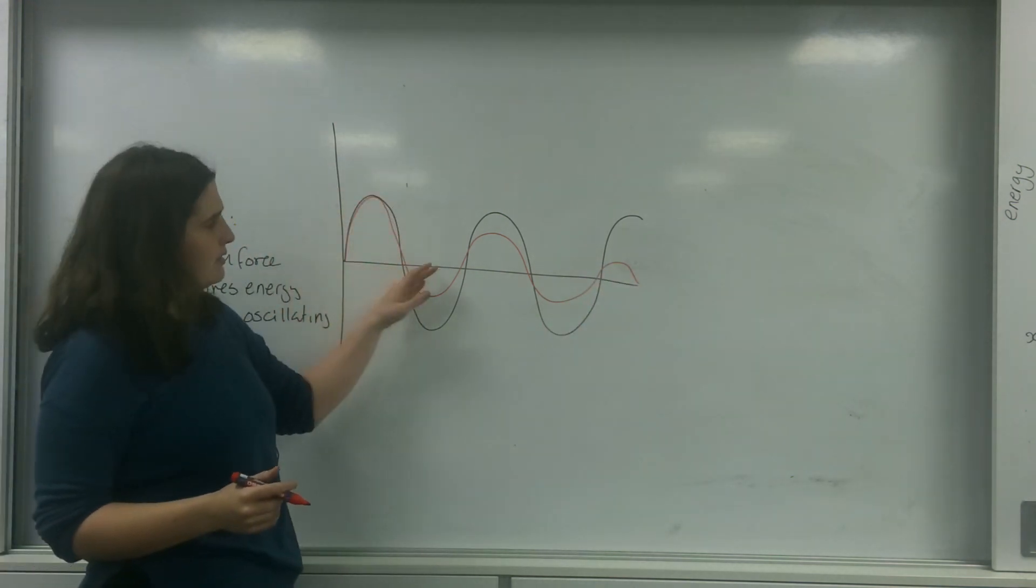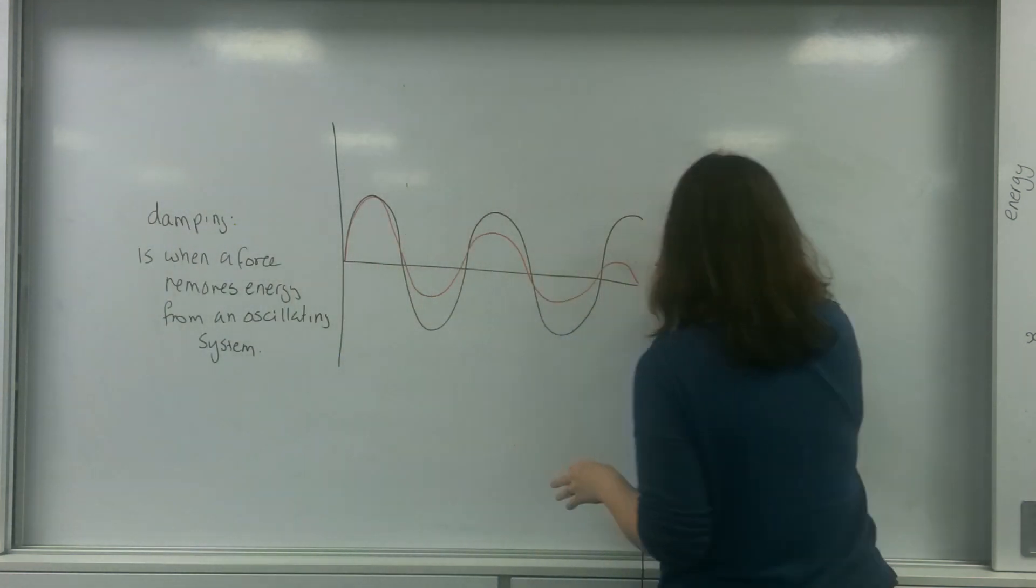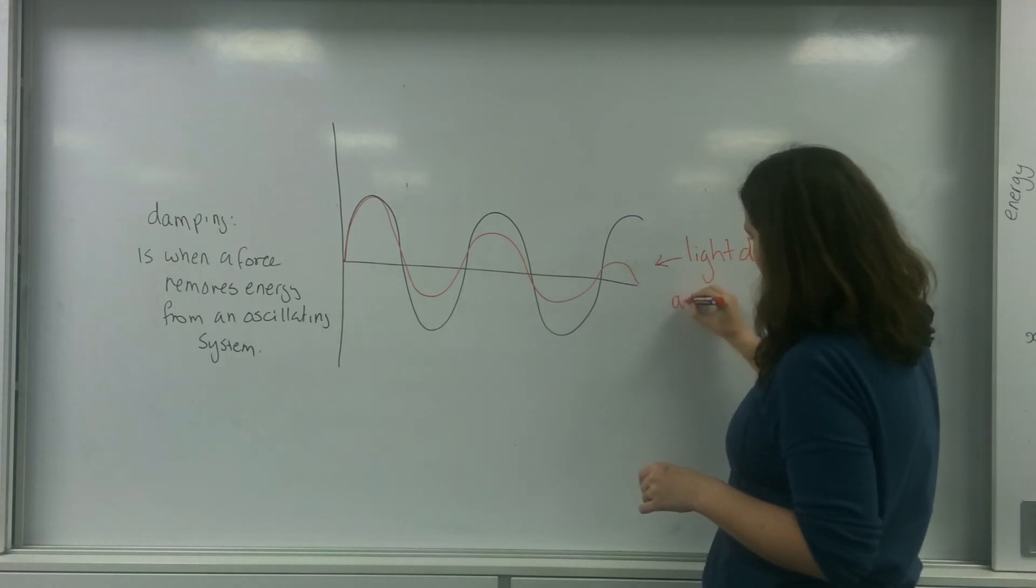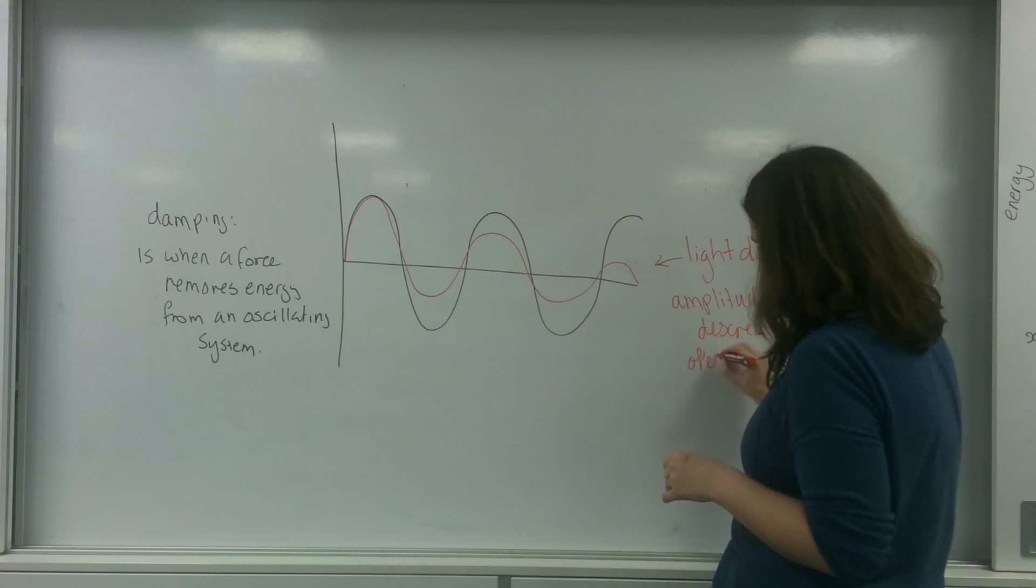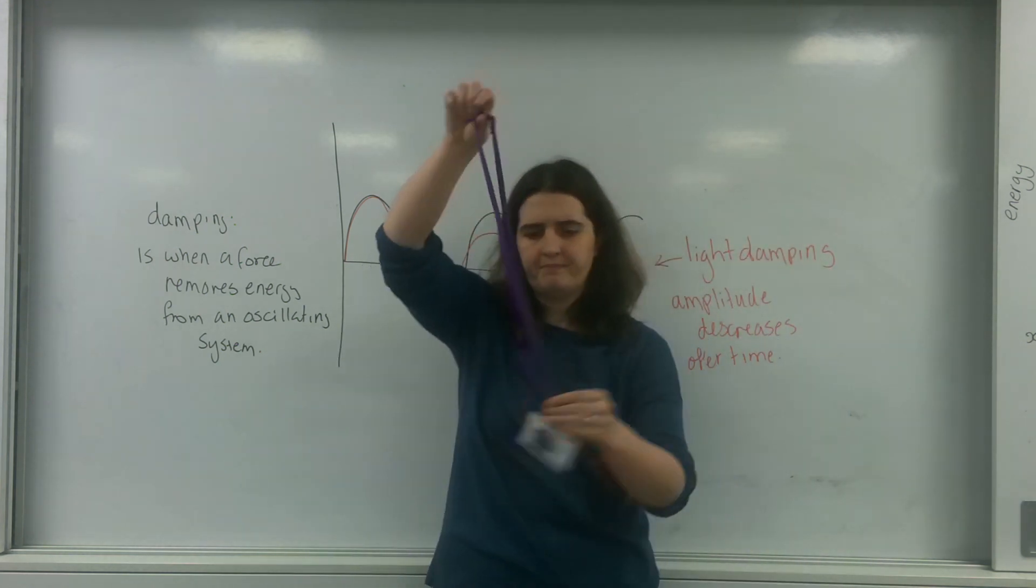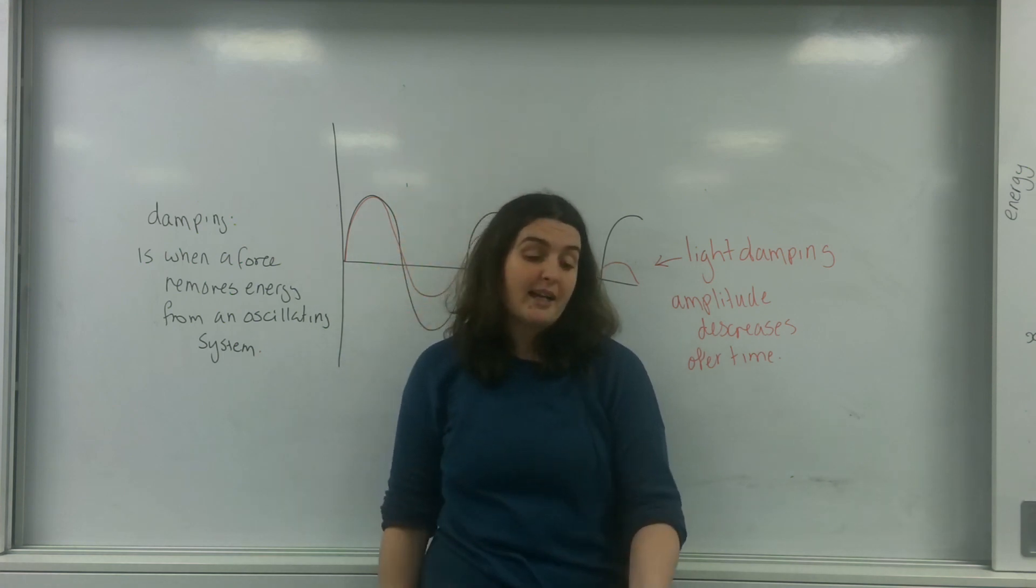You can see here, I've got my maximum and then it's decreasing. So this here is light damping, where amplitude decreases over time. This is just your natural occurrence. This will eventually decrease over time due to friction in the air and drag.